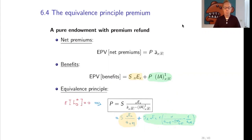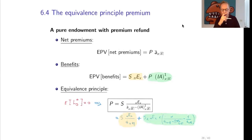Let us determine the premium by the equivalence principle. The equivalence principle tells us that the expected loss at policy issue must be equal to 0. Solving this equation, the premium of such a contract is given by s times E_{xn} divided by ä_{xn} minus i times A^1_{xn}. We can rewrite this premium as s times E_{xn} divided by ä_{xn} — that is the premium for the pure endowment — plus an extra term, which is what you pay extra for the premium refund.